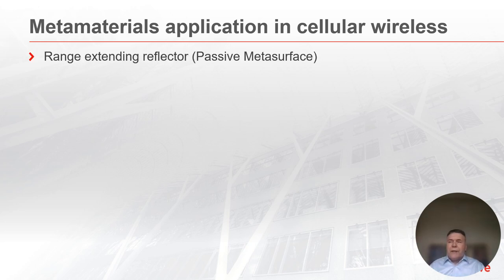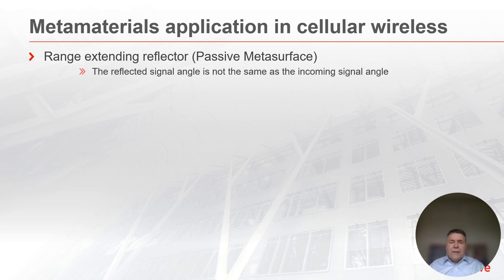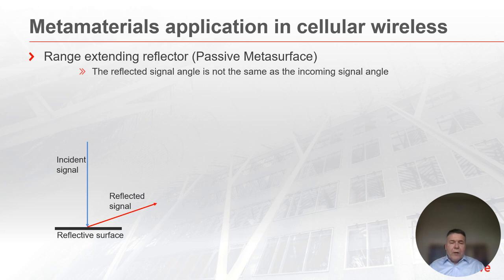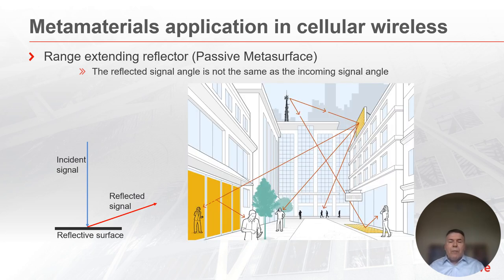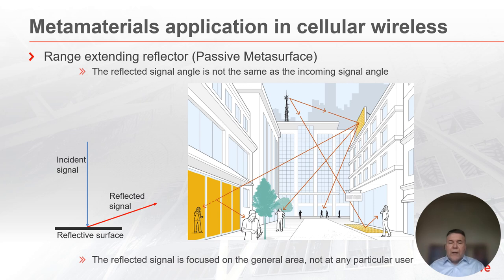Let's talk about passive metasurfaces first. Passive metasurfaces potentially can be used as range-extending reflectors. The reflected signal angle, if passive metasurfaces are used, is not the same as the incoming signal angle. Using a passive reflective surface, the incident angle that comes in at 90 degrees at the surface is reflected with a very sharp angle, which is not something you will see in nature. A particular application is shown here, where a metasurface is at a billboard and it directs the reflected signal from the neighboring base station onto the pedestrian mall. The reflected signal is focused on the general area, not on any particular user.